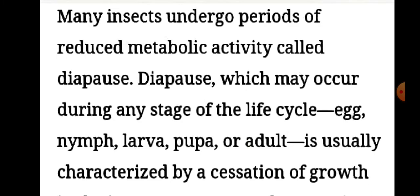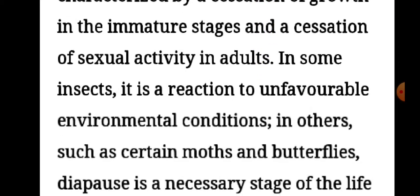Many insects undergo periods of reduced metabolic activity called diapause. Diapause may occur during any stage of the life cycle — egg, nymph, larva, pupa or adult — and is usually characterized by a cessation of growth in immature stages and a cessation of sexual activity in adults. In some insects, it is a reaction to unfavorable environmental conditions.